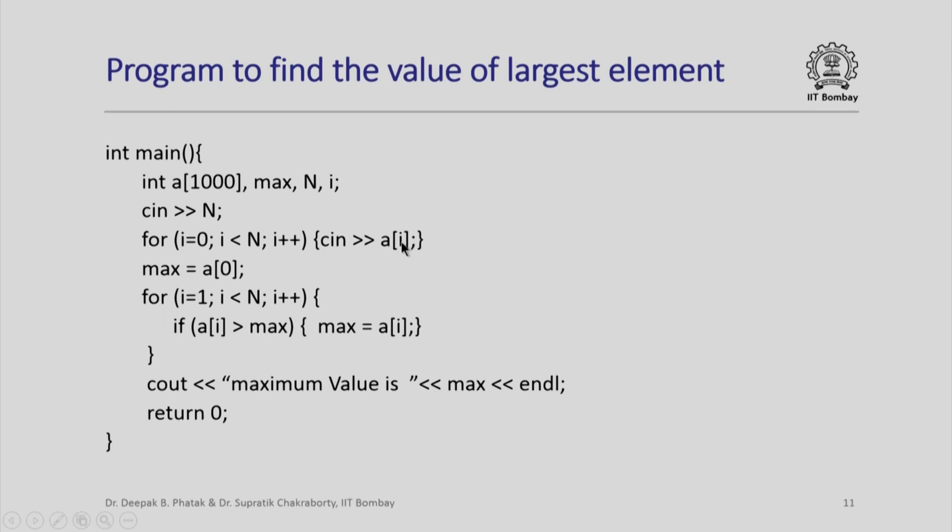Now we want to find out the maximum, so we assign the zeroth element of the array to the variable max. And now we compare this max successively with all the remaining elements. Whenever we find an element of A which is larger than max, we replace the value of max.